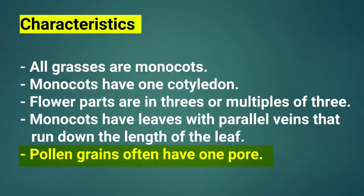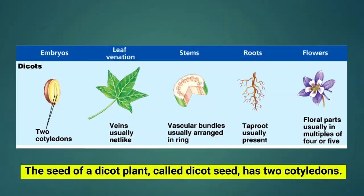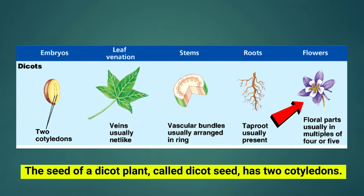Let's look at dicots. The seed of a dicot plant, called a dicot seed, has two cotyledons. So the monocot has one and the dicot has two. Dicots have two cotyledons, flower parts in fours or multiples of fours or fives, leaves that form a net pattern, and pollen grains that often have three pores.